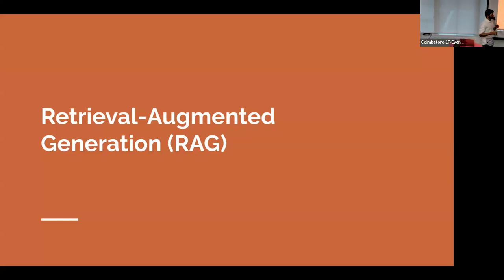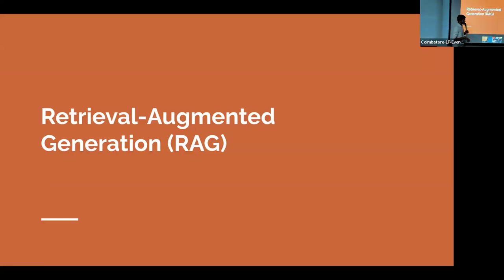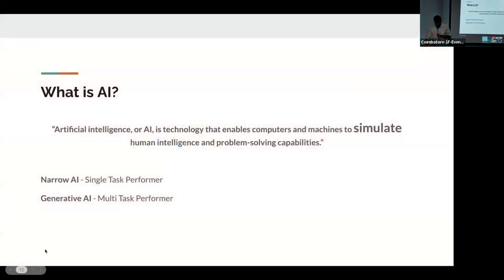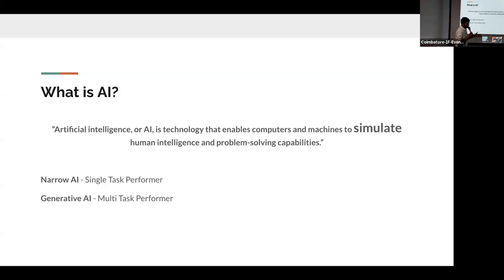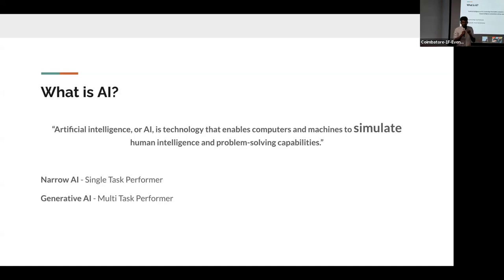Let me start with retrieval augmented generation. There are major topics involved in the multilingual and RAG concept. Starting with AI — artificial intelligence is a technology used to train machines to simulate human behavior. That is the overall aim of AI, whether generative AI, deep learning, or machine learning. Its main task is to simulate what humans do. Here I have mentioned two types of AI. One is narrow AI, which is a single task performer. Before this AI boom, we had machine learning models or deep learning models that were able to do only a single task.